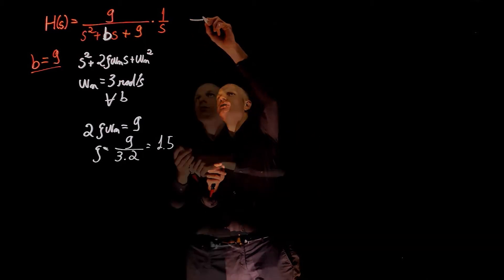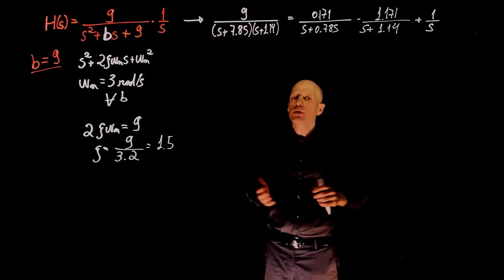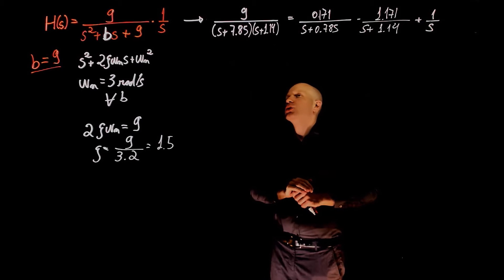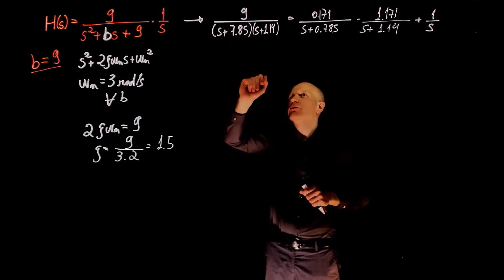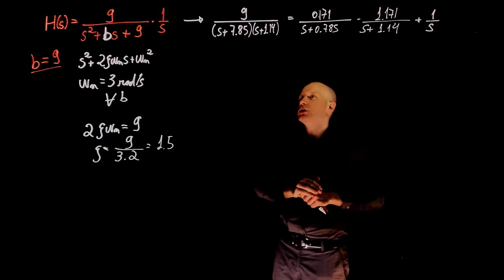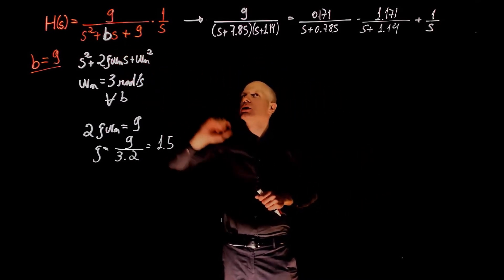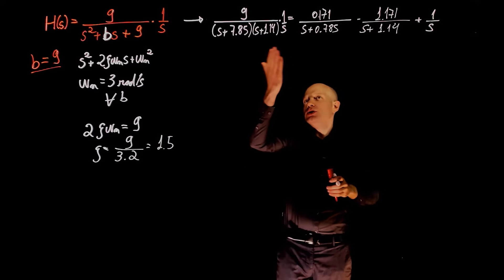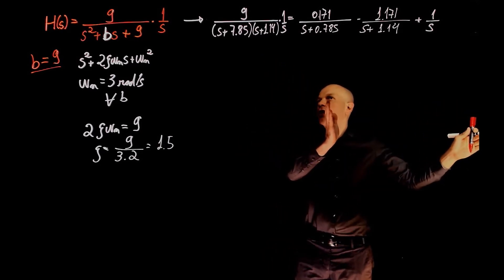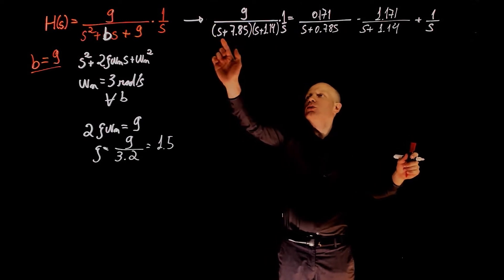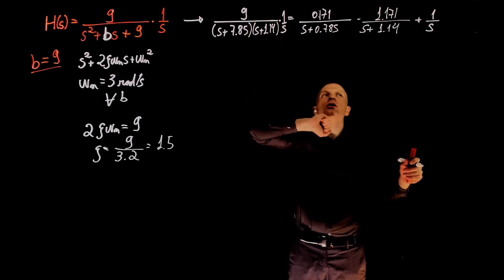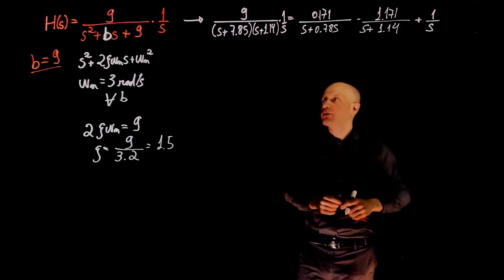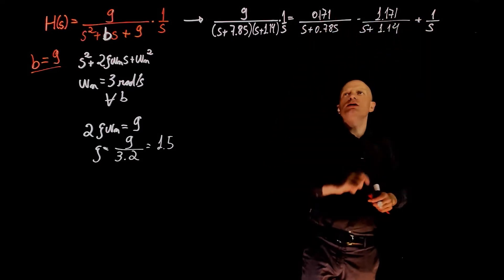Because the poles are real numbers, we can rewrite the expression as a function of the poles. The first pole is negative 7.85 and the second one is negative 1.14 — these are the values of s that make the denominator zero. Multiplied by 1 over s (the input), this can be split into three partial fractions: one for the first root, one for s plus 1.14, and one for 1 over s. Solving the partial fraction decomposition gives the constants shown.